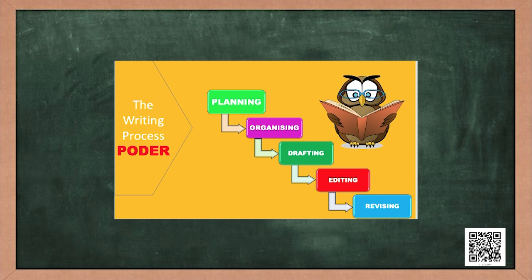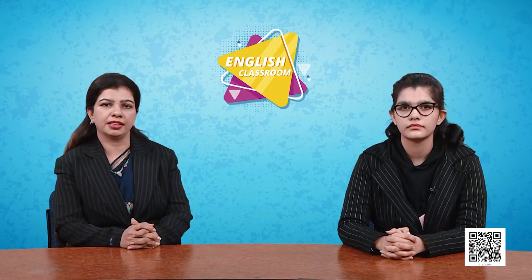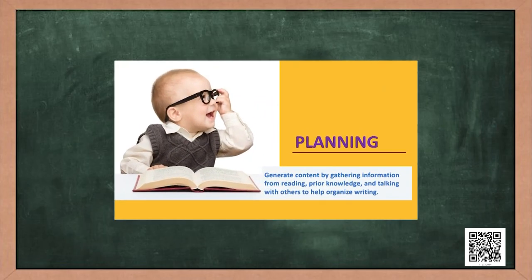To help you remember, I like to call it PODAR — where P stands for Planning, O for Organizing, D for Drafting, E for Editing, and R for Revising. That's interesting ma'am — could you explain it in detail? Of course, dear. First let me explain the planning stage.